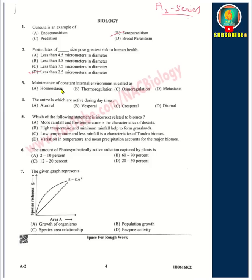Third question: Maintenance of constant internal environment is called homeostasis. Fourth question: Animals which are active during daytime are called diurnal. Fifth question: Which of the following statements is incorrect related to biomes? Answer is option A — more rainfall and low temperature as characteristics of desert is incorrect.